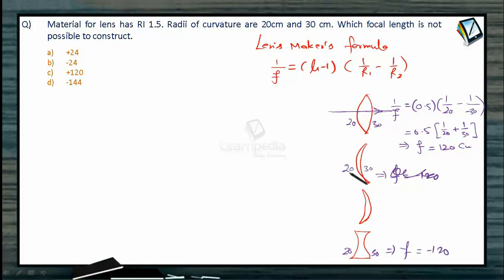Now if we assume this to be 20 and this to be 30, means here I have assumed convex surface to be 30. In this case I have assumed convex surface to be 30. Here convex surface to be 20, here convex surface to be 30.